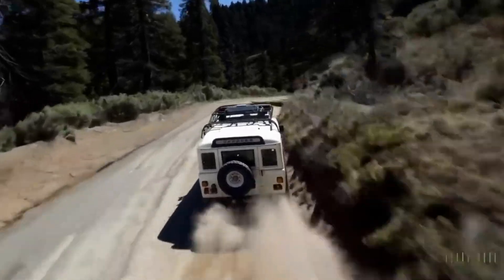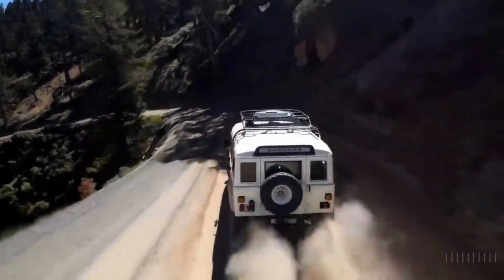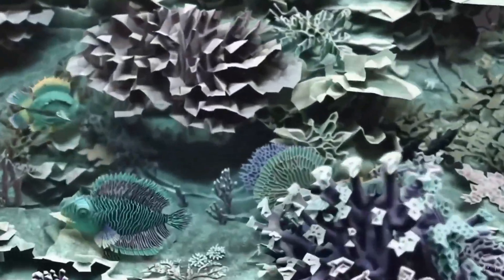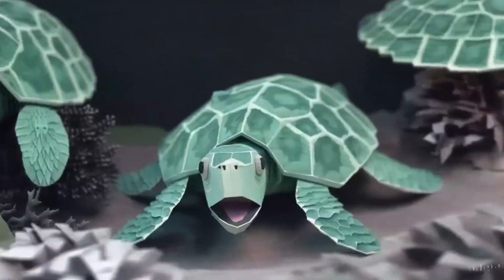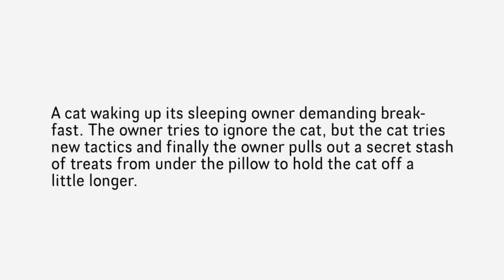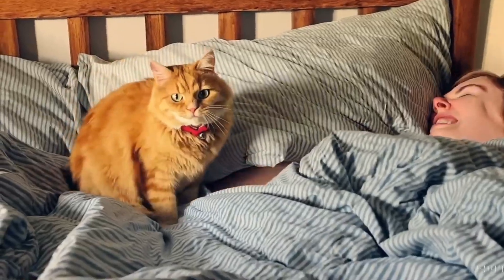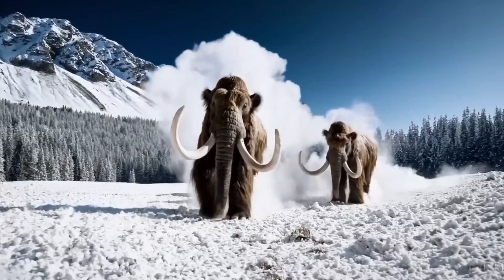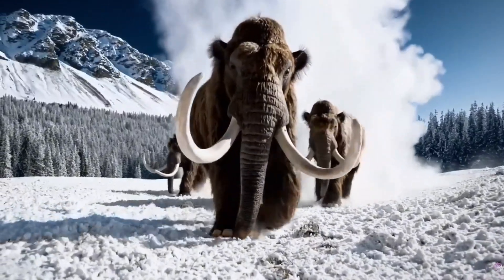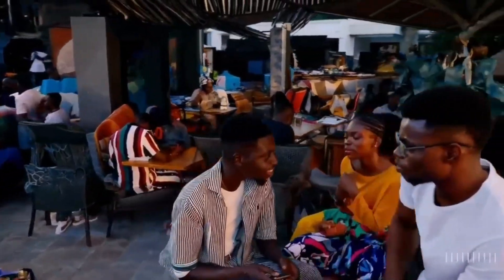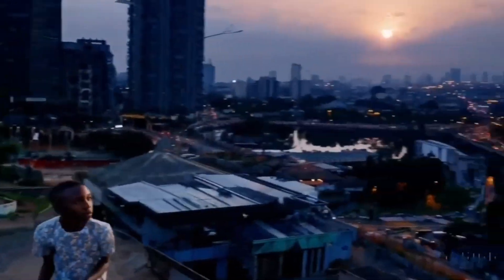This brings us to the potential applications of Sora. While it's currently being employed to create educational content, advertisements, and even art, its potential extends further. Imagine creating a visual representation of a concept you're struggling to understand, or generating a short film based on a story you've written. The possibilities are as vast as our imaginations. With Sora, the line between words and visual content is blurring — but how do we create these words in the first place? Enter Neuralink.